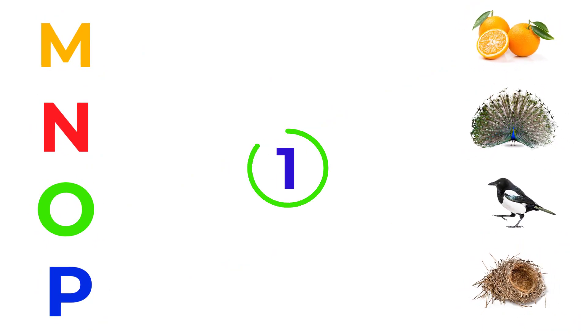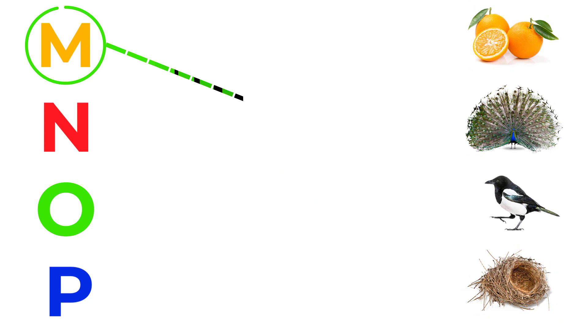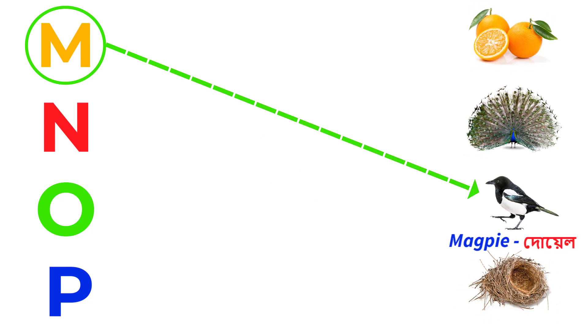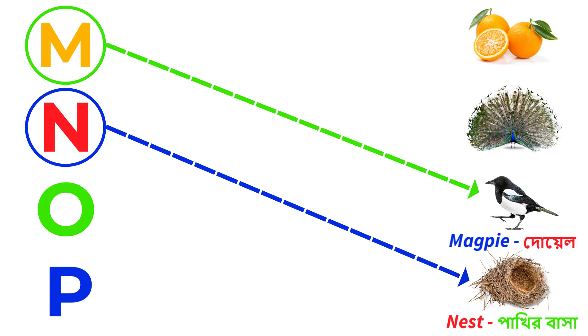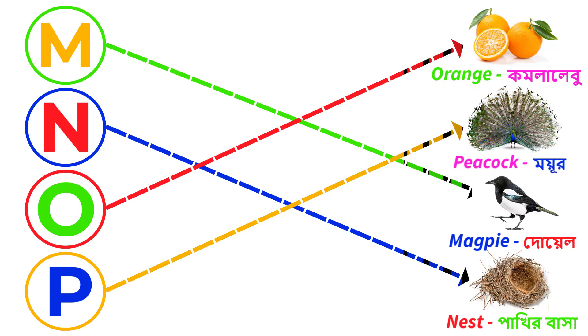M for magpie. N for nest. O for orange. P for peacock.